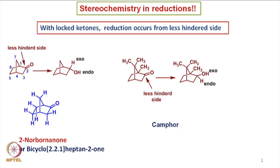Now we look at the stereochemistry in reductions of ketones. If we take locked ketones, we find that reduction occurs from the less hindered side. For example, if we take a bicyclic ketone — 2-norbornone, also called bicyclo[2.2.1]heptan-2-one — and examine the positions of hydrogens around the carbonyl group, we see that the endo side of the molecule is sterically more hindered than the exo side. There are 3 endo hydrogens at the lower side, whereas only one hydrogen blocks the carbonyl face from the exo side.